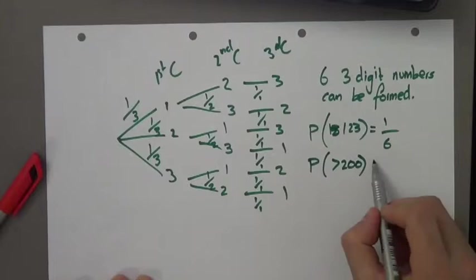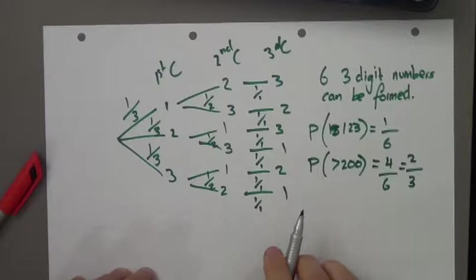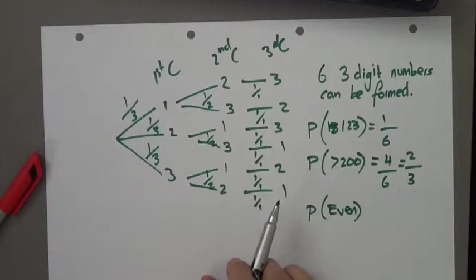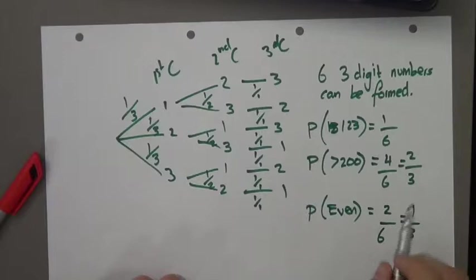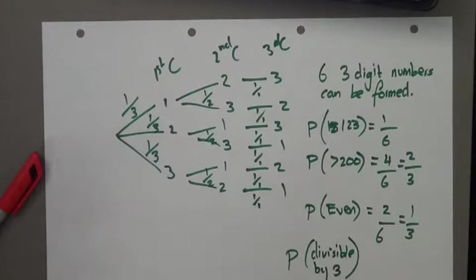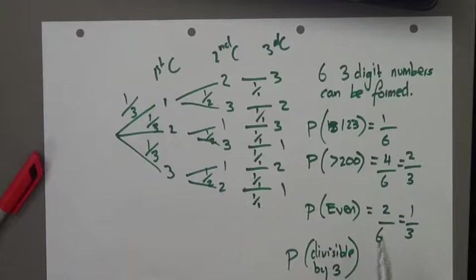What is the probability that they are even? That's not even, this is even, that's not even, that's not even. So that's going to be two out of six, which is one-third. What is the probability that they're divisible by three? The probability that they are divisible by three is all of them — if you use your calculator and divided all of these by three, you would find all of them do. So it's going to be six out of six, which is 100%, which is 1.